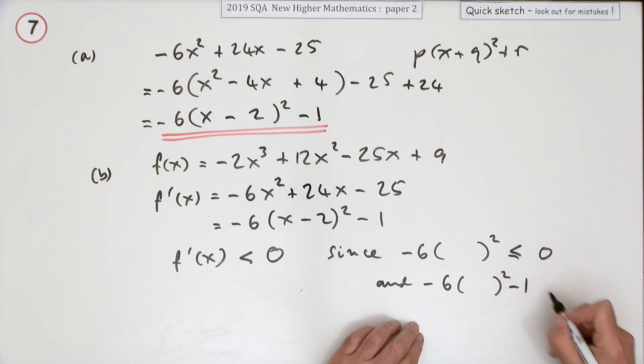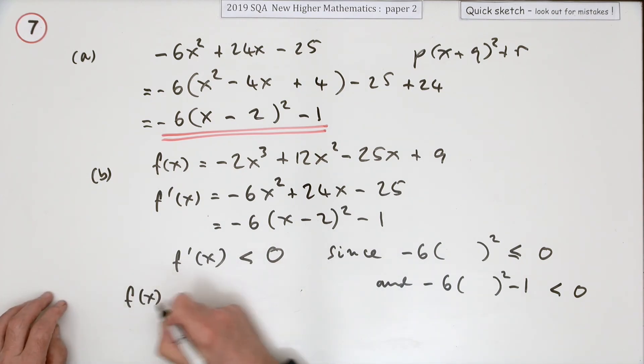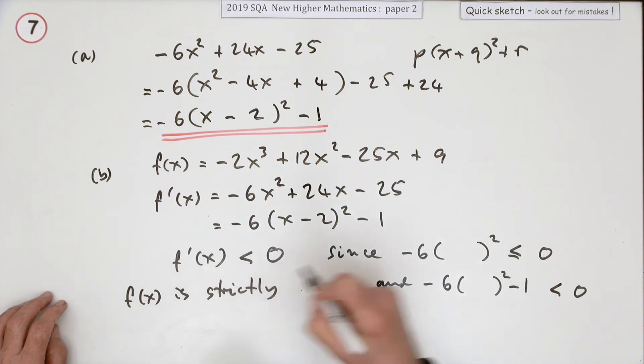And negative 6 times anything squared minus a one, since it's one less, is definitely less than zero. So since that derivative is definitely less than zero, you can see f(x) is strictly decreasing all the time.